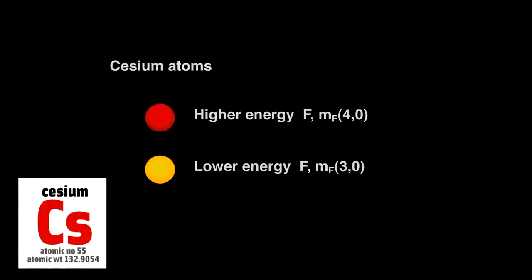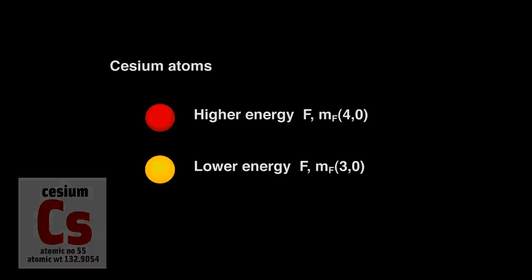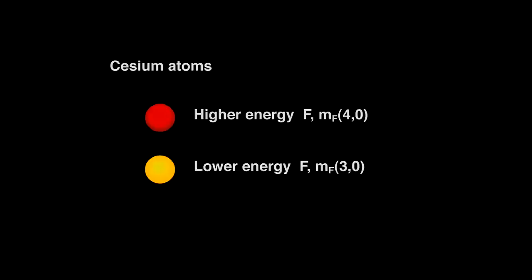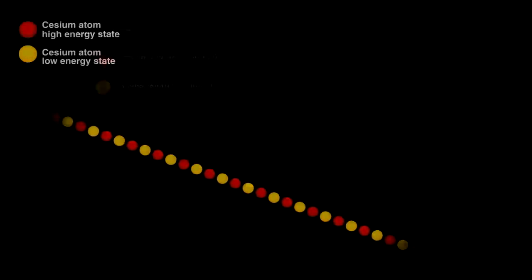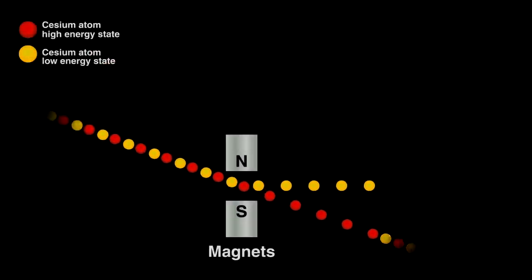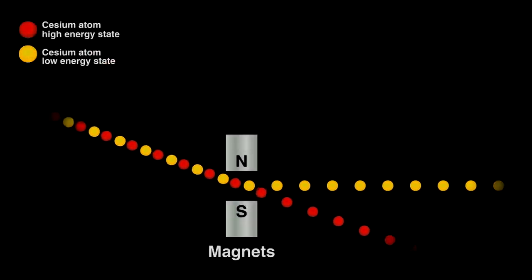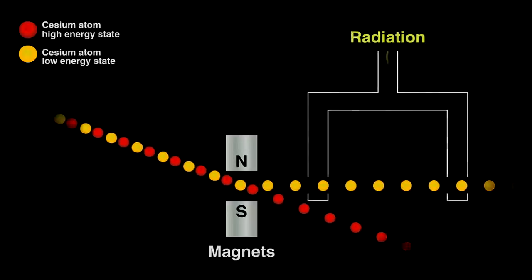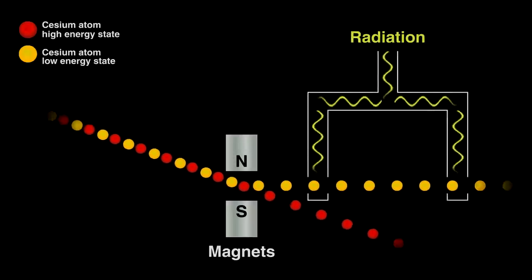The atoms in pure cesium exist mostly in two slightly different forms: a low energy form and one with just a bit more energy. For an atomic clock, these two states have two properties critical to making a clock. One, they can be separated by a magnet. And two, the lower energy atoms can be converted to the higher energy ones if we bombard cesium with the right radiation.